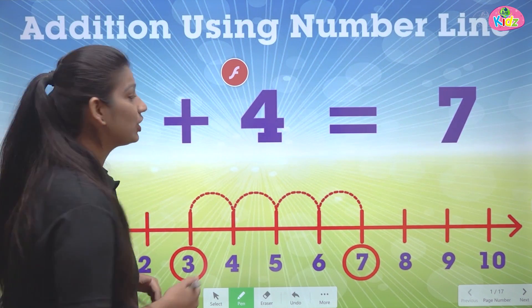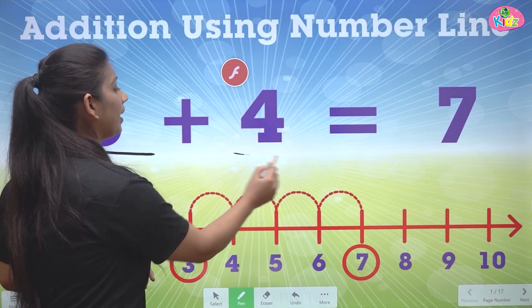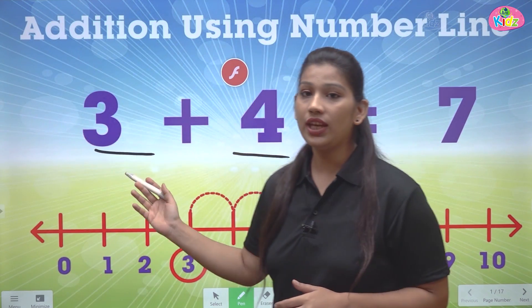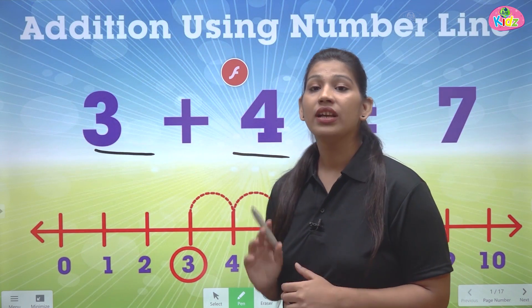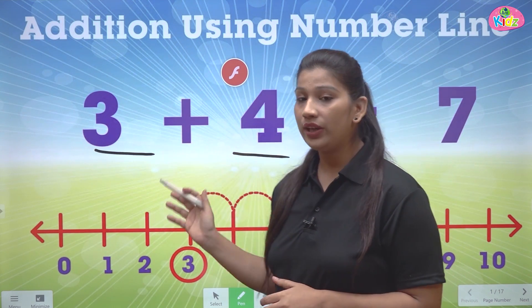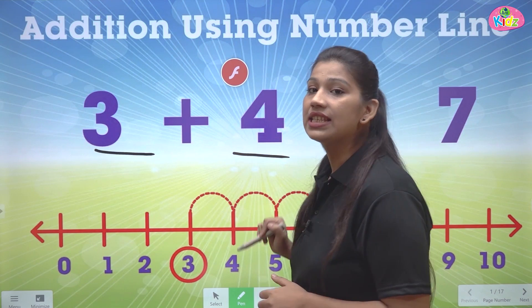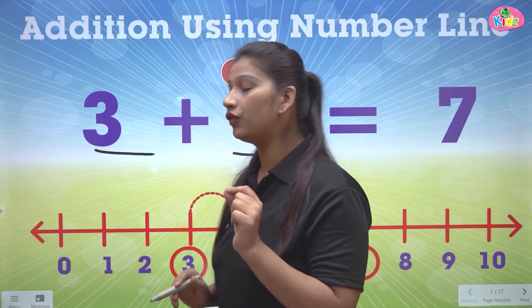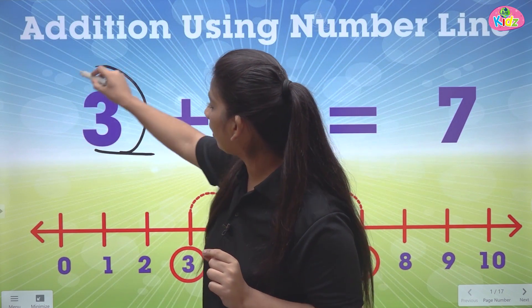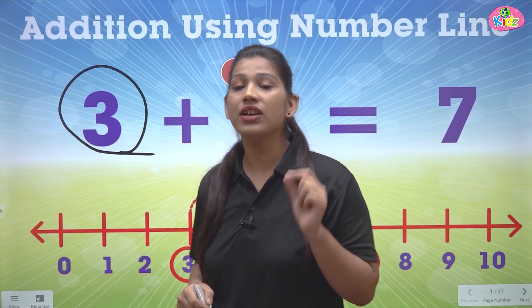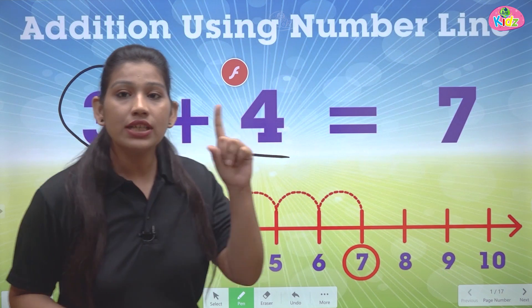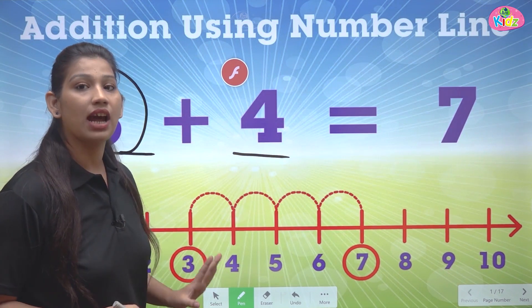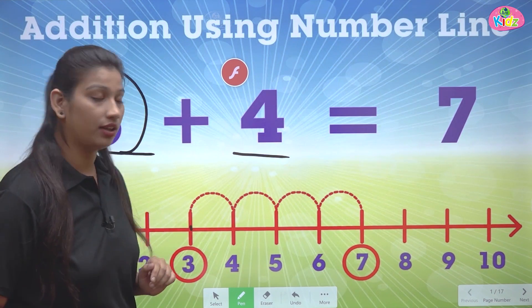Here students, you can see two numbers: three plus four. You have to add three and four on this number line. So whatever number we have first, we will start from that number. The first number we have is three, so on this number line, we will start from three.